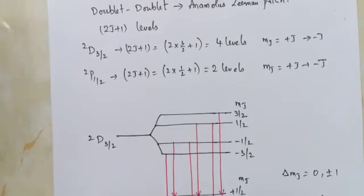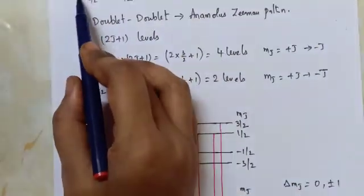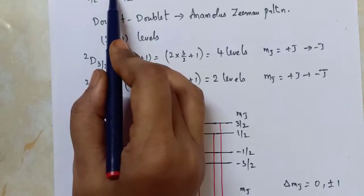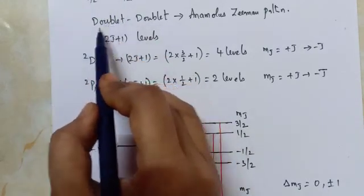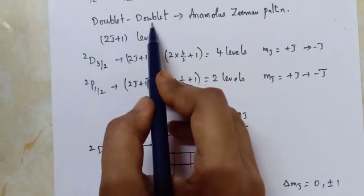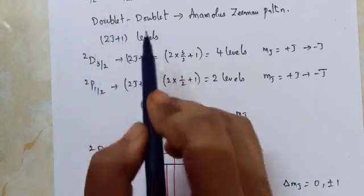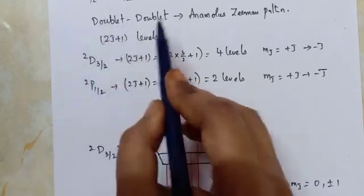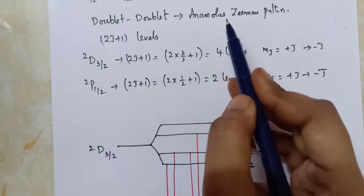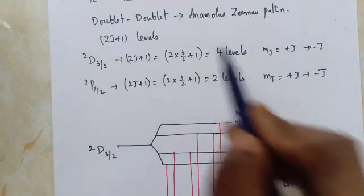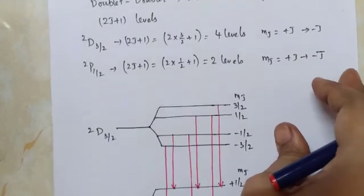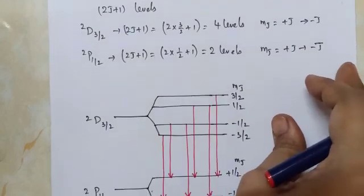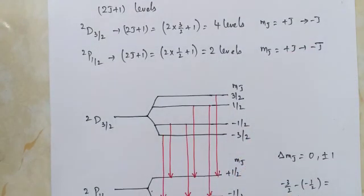So depending on the 2S+1 multiplicity value, we decide whether it is a doublet-doublet or singlet-singlet transition. Based on that, the resulting pattern will be either a normal Zeeman pattern or an anomalous Zeeman pattern, and accordingly we calculate the number of allowed transitions.